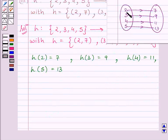All the elements of the set {2, 3, 4, 5} have distinct images in the set {7, 9, 11, 13}. So clearly, it is a one-to-one function.